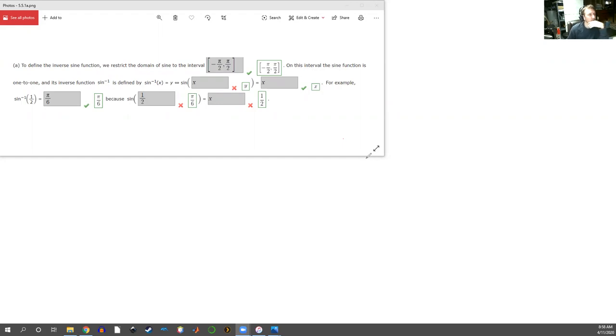Well there, some interval. On this interval, the sine function is one to one and its inverse function sine inverse is defined by sine inverse of x is y if and only if sine of something is something else. So let me give you just an example of what this is and we'll go from there.